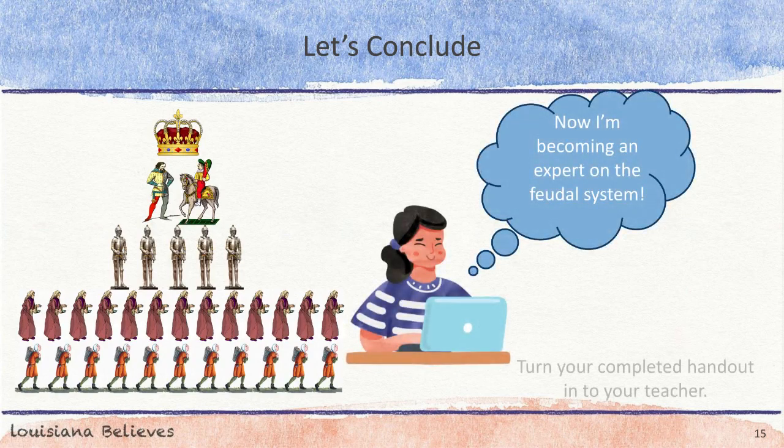You have learned how people were organized into social classes by the feudal system in the Middle Ages. Understanding the roles of different people — like the whipping boy — in the Middle Ages is important for understanding the characters and important ideas in the upcoming guidebook unit text The Whipping Boy. When you have finished this video, be sure to turn in your completed handout to your teacher.